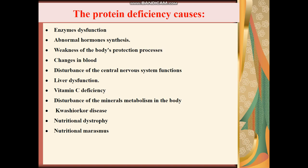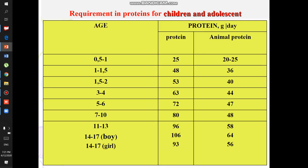Lack of proteins in the diet increases the body's excretion of vitamin C. Increased urinary excretion of riboflavin B2 and the development of riboflavinosis is closely connected with protein provision in the body. With long-term insufficient intake of protein with food, children develop the disease called kwashiorkor, nutritional dystrophy, nutritional marasmus, and protein-energy malnutrition.